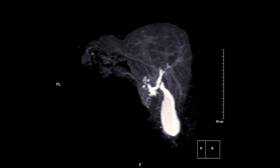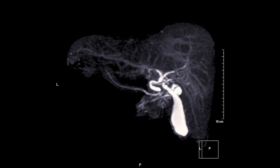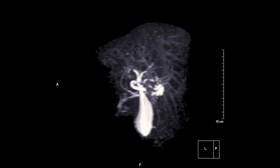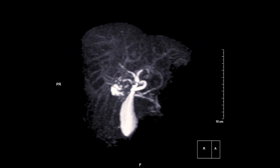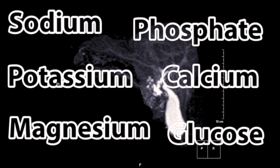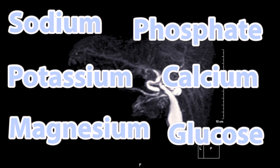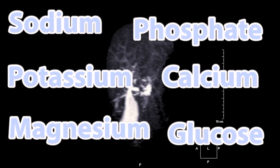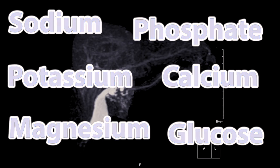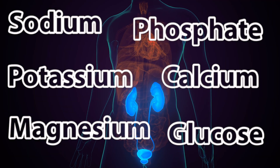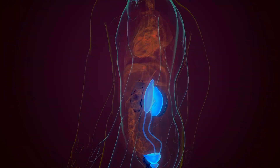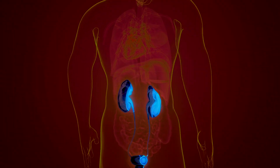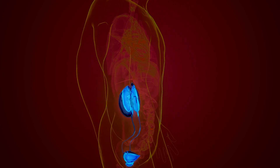Metabolic abnormalities: gross metabolic abnormalities should also be excluded, including significant abnormalities of sodium, potassium, magnesium, phosphate, calcium, and glucose. Abnormalities such as extremely low phosphate levels or severe hypernatremia or high sodium related to diabetes insipidus may mimic brainstem death, and these things are reversible.